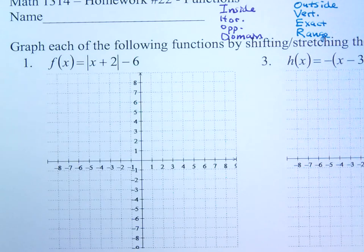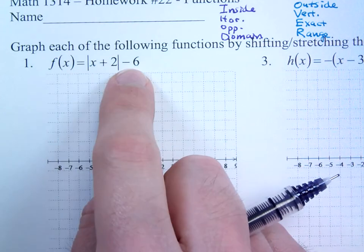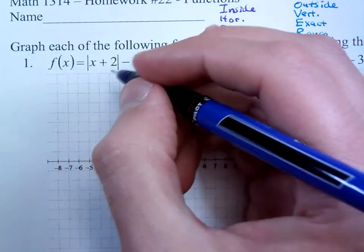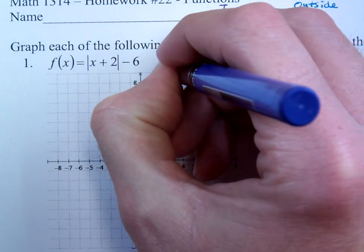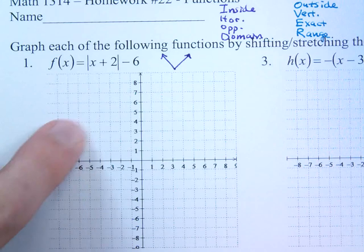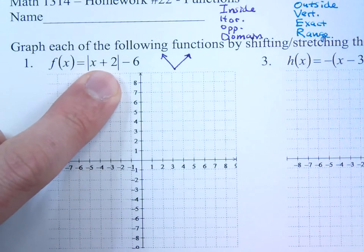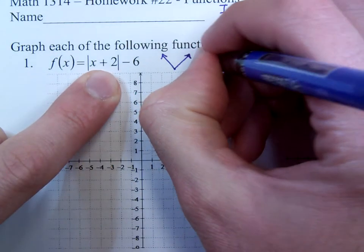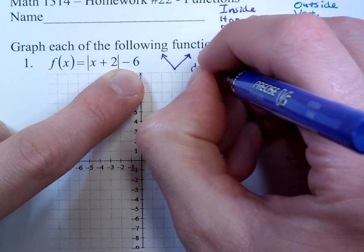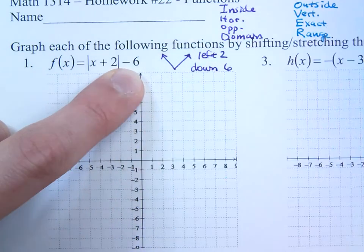We're going to start with the first one here. f(x) = |x + 2| - 6. Keep in mind this is absolute value so we know the shape should be some kind of V shape like this. And we need to find the vertex. The opposite of the inside is negative 2, so that means I'm going to the left 2.